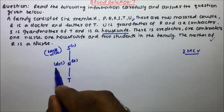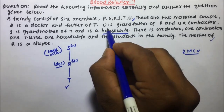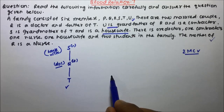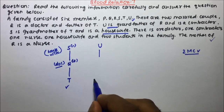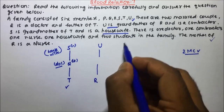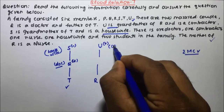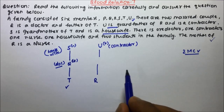So now there is one doctor, one contractor, one nurse, and one housewife, and two students in the family. The mother of R is a nurse. U is grandfather of R and is a contractor. Grandfather means U will be the father of the father of R. So U is male, and U is a contractor.